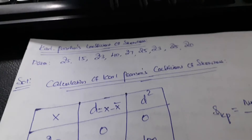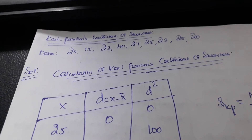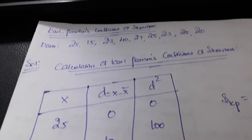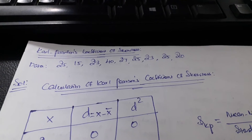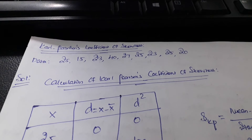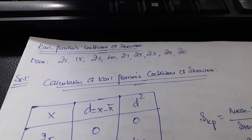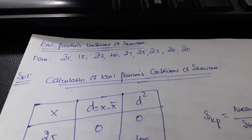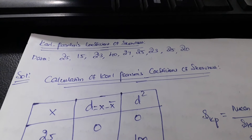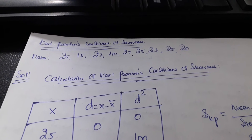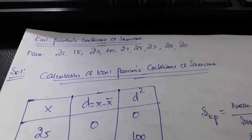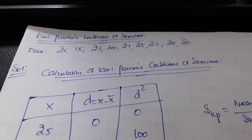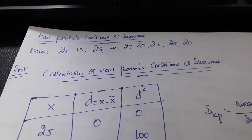Good evening everyone. Today we are going to look at an important topic of business statistics. The topic is skewness. Skewness is described as the shape of a distribution.